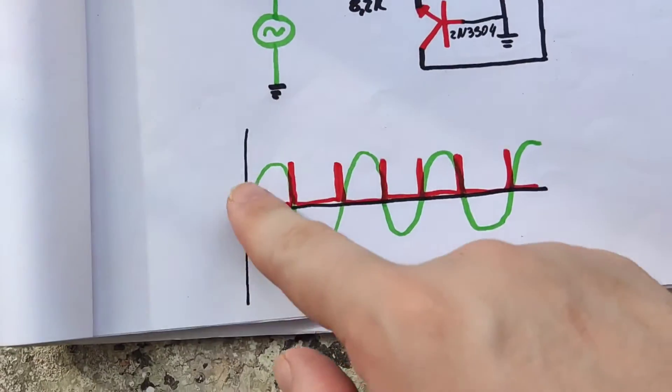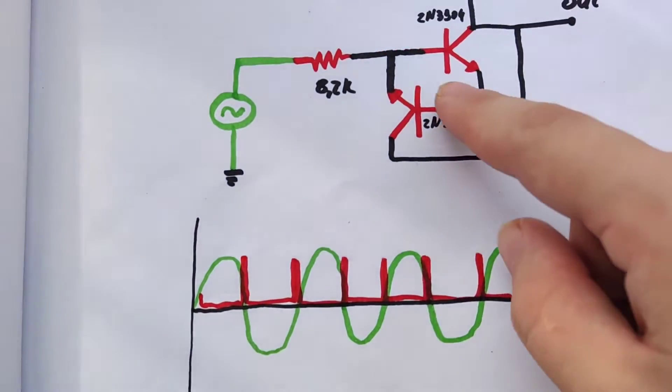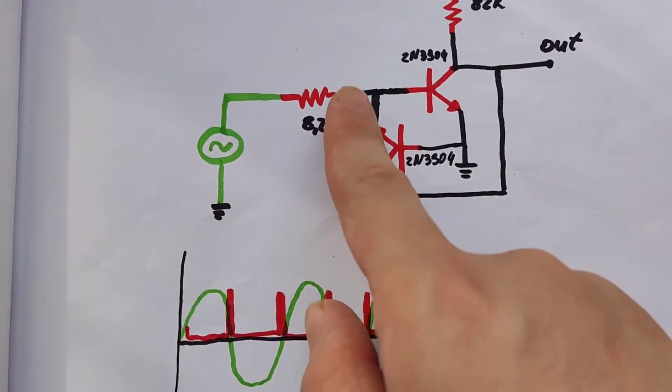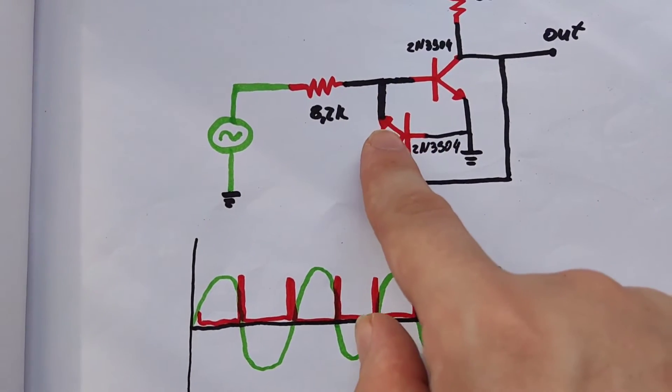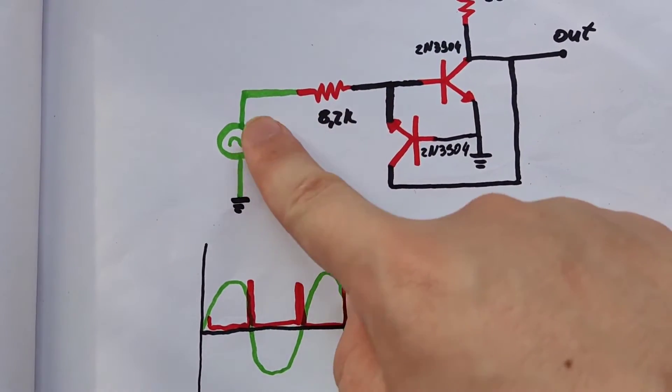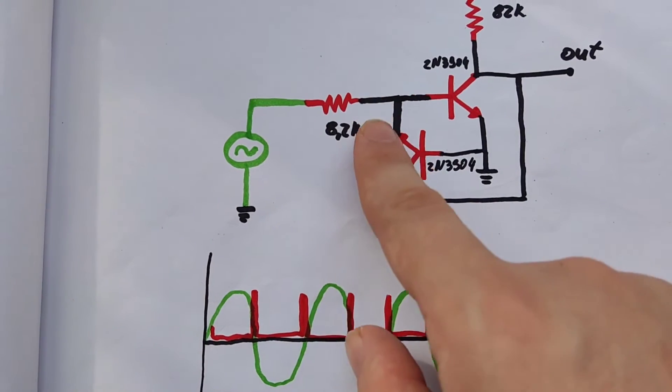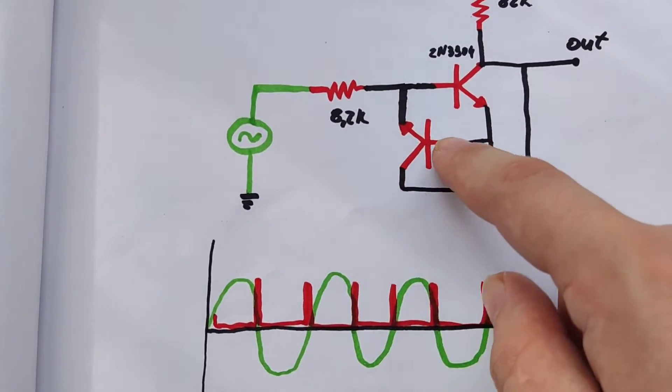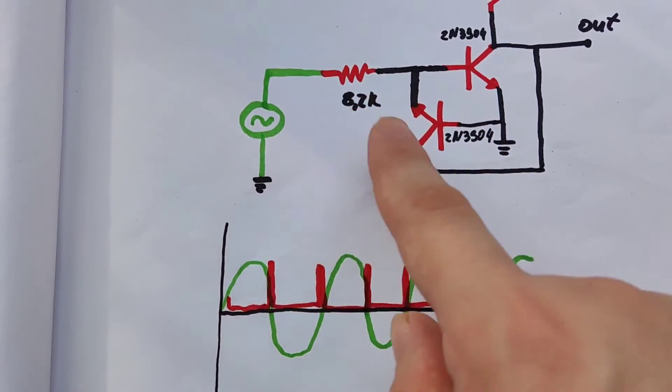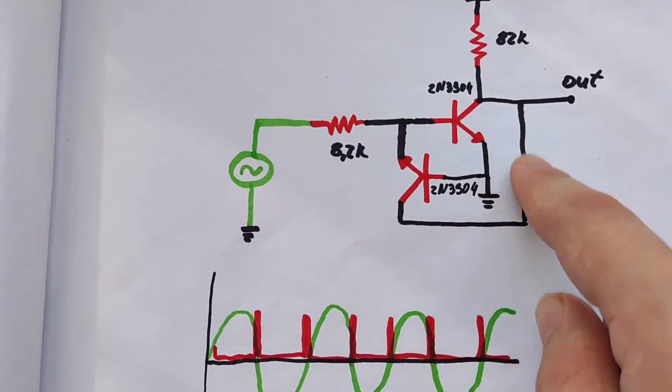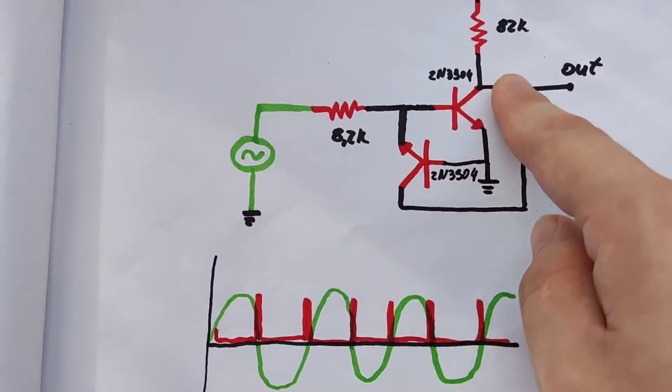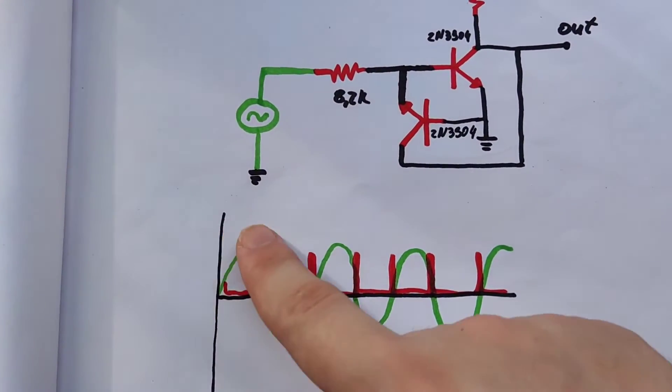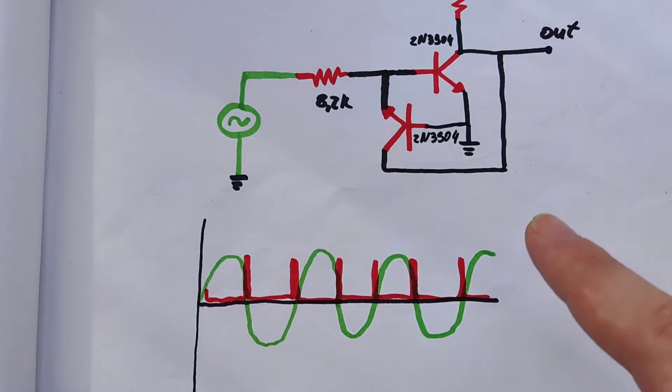Now let's consider the case when the voltage at the AC source goes negative. In that case, the voltage at the base of the second transistor is becoming more positive than the voltage at the emitter, because the emitter voltage is going negative relative to ground, to which the base is connected. So when the voltage drops below minus 0.6, the second transistor starts to conduct and drops the output voltage low.